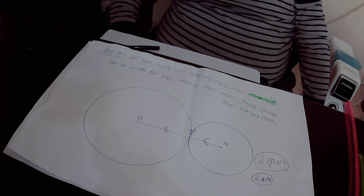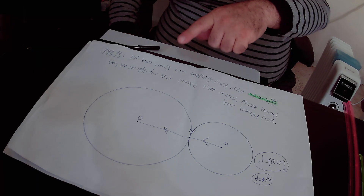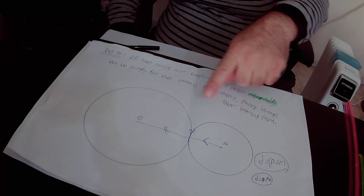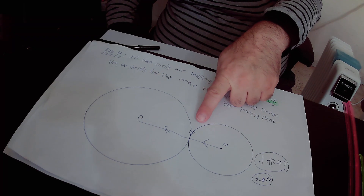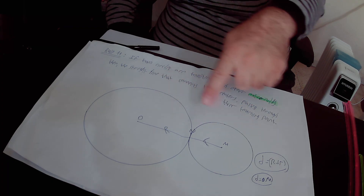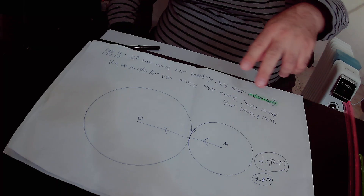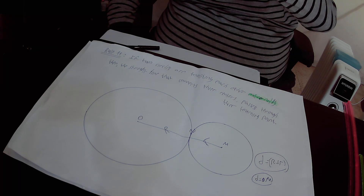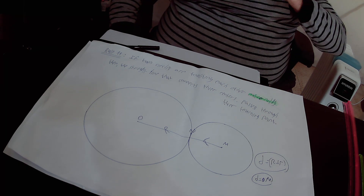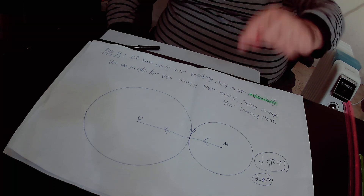Whenever we have an external tangency between two circles, the straight line connecting the centers must pass through the touching point, so OMN is one straight line. And the distance OM between their centers will be equal to the addition of the two radii: capital R plus small r.